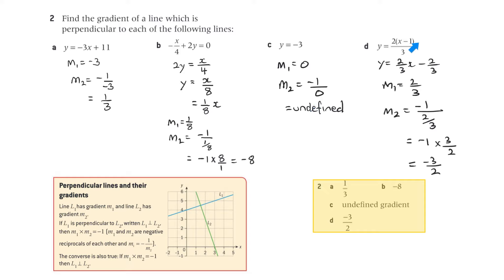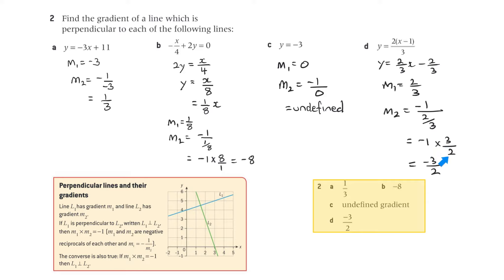For part d, expanding gives y equals 2 on 3 x minus 2 on 3, so m1 is 2 on 3. Then m2 equals minus 1 on m1, which is minus 1 on 2 thirds. Dividing by a fraction means multiplying by the reciprocal, so that's minus 1 times 3 on 2, which is minus 3 on 2. That is the gradient of the perpendicular line.